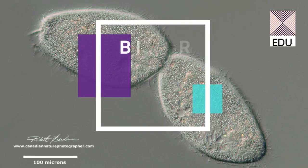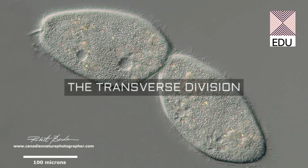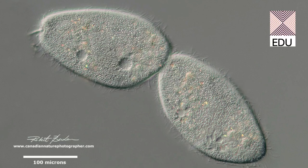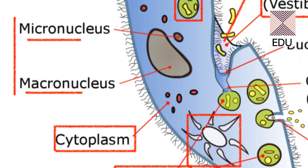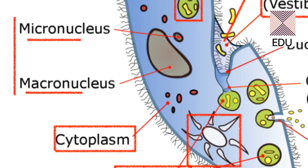Before starting binary fission, I must explain the number of nuclei in Paramecium caudatum. As we have studied in the structure of paramecium, Paramecium caudatum has got two nuclei: one macronucleus and one micronucleus. Only the micronucleus is involved in reproduction, while the macronucleus is involved in other metabolic processes. So here we are emphasizing much on the micronucleus.